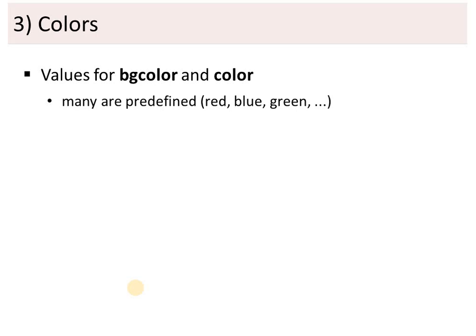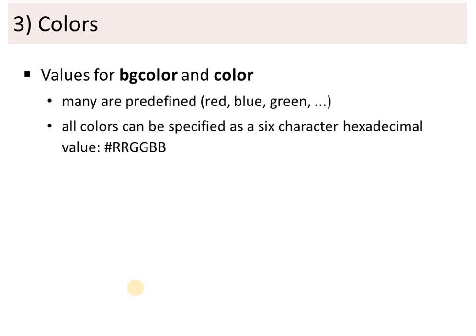Now, color. You can specify color values for background color and text color using attributes. There are a few formats: first, predefined color names like red, blue, and green. You can also use a six-character hexadecimal value. For example, red is #FF0000. After the hash sign there are six characters — alphabetic from a to f or numeric from 0 to 9. For gray, use #888888, and for black there is a predefined hex code.